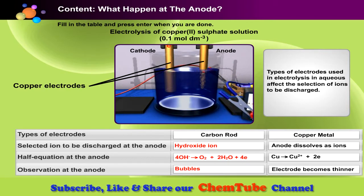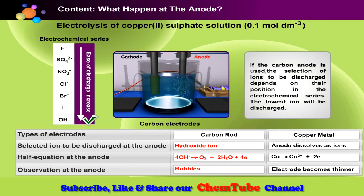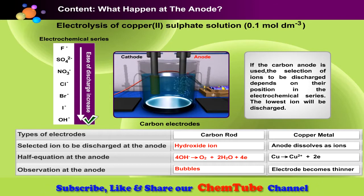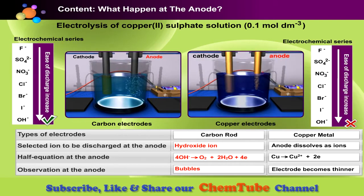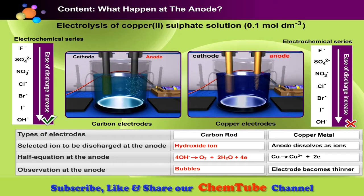From the table, it can clearly be seen that the type of electrode affects the selection of ions to be discharged. If a carbon anode is used, the selection of ions to be discharged depends on their position in the electrochemical series — the lowest ion in the series will be discharged. But when copper metal is used as the anode, the selection does not depend on their position in the electrochemical series; instead, the electrode dissolves as ions.